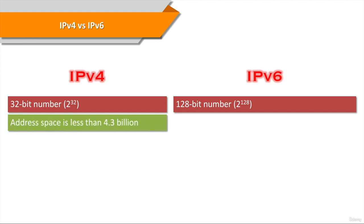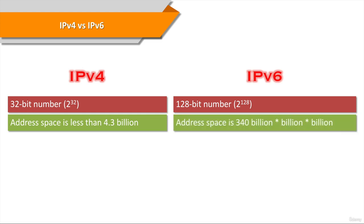Theoretically, you can address 2 to the power of 32 devices in IPv4, which is about 4.3 billion. In IPv6, on the other hand, you can address 2 to the power of 128 devices.